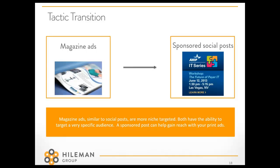Taking the traditional magazine ad, the digital complement would be social sponsored posts. The same idea of targeting a really niche audience — when you place a magazine ad, you're targeting a specific age range in a specific genre, like Golf Digest for retired men who are avid golfers. Sponsored posts have that same mindset: you can get very granular with your targeting, understanding a specific persona that you want to reach and message to.